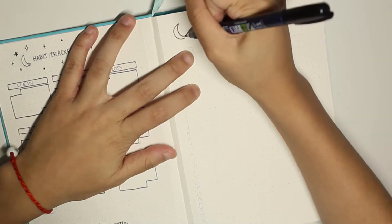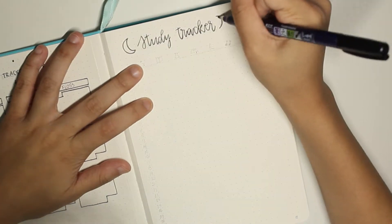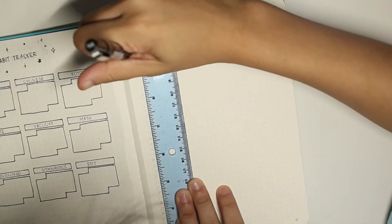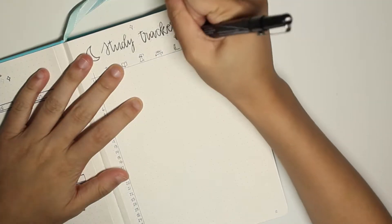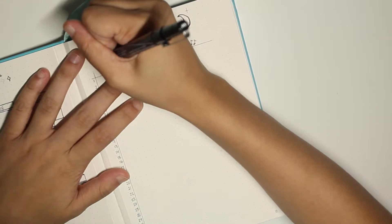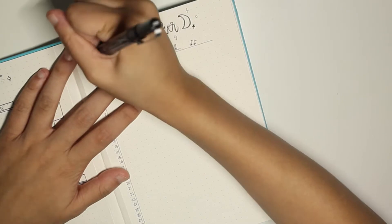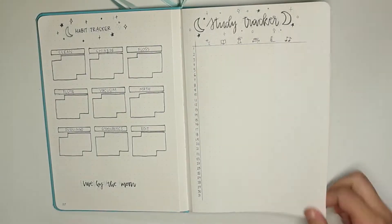I added a study tracker this month and it looks like the traditional habit tracker. On the top we have all of my subjects represented in little pictures and on the side I have all the days of the month. So whenever I study a certain subject that day I will just color or draw a little circle in that row under the little picture.